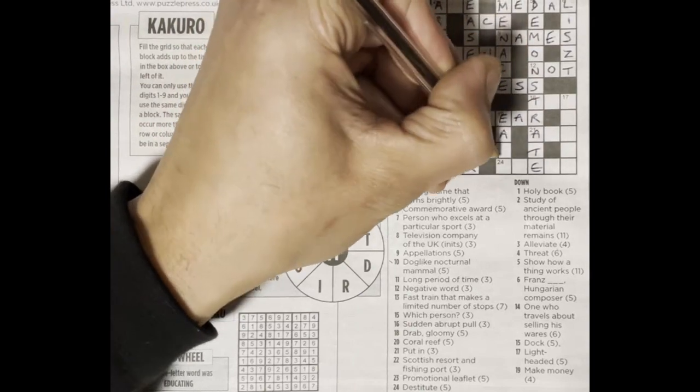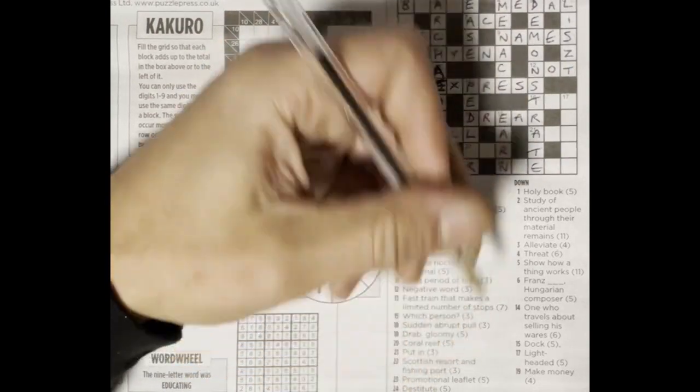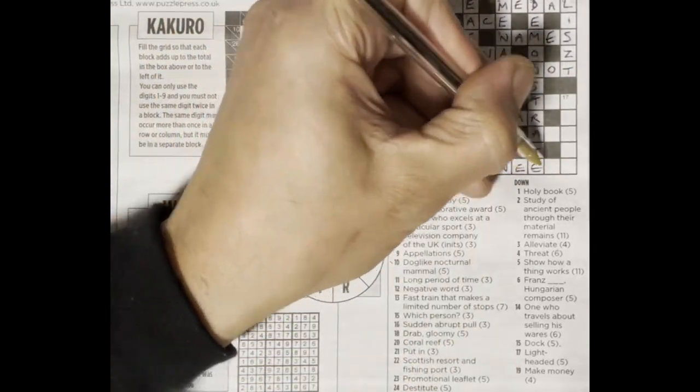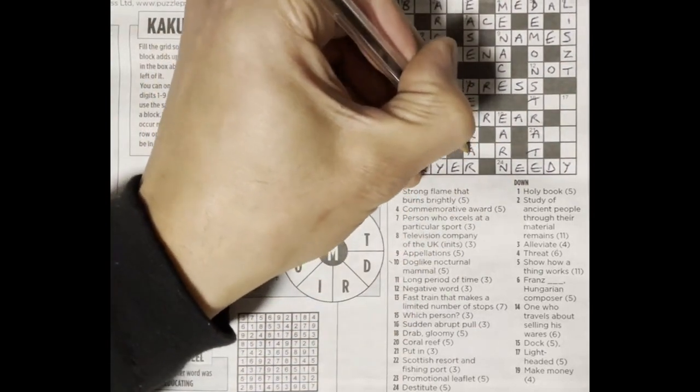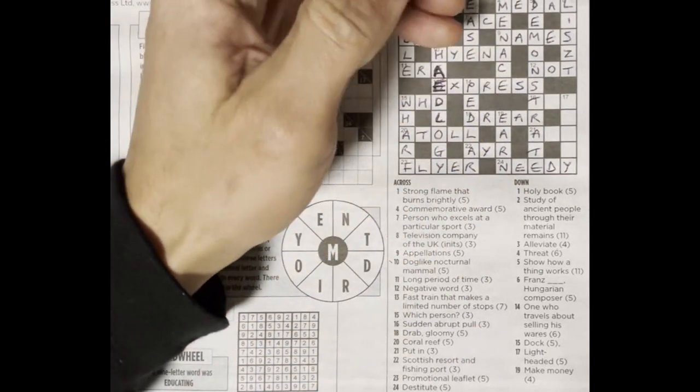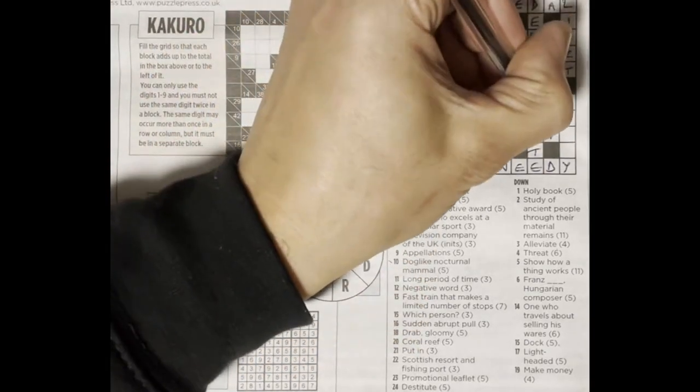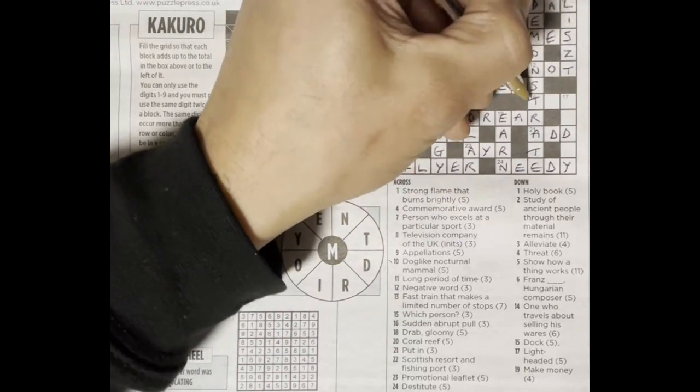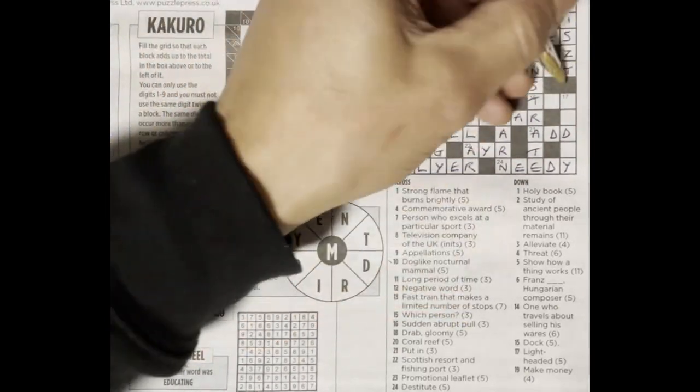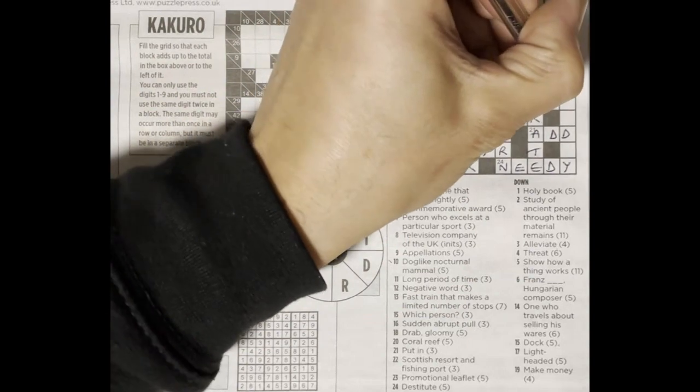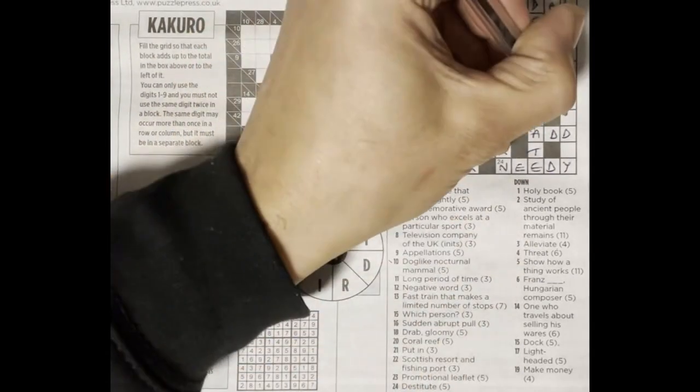Make money. Twenty-four across, destitute, needy. Twenty-two, I'm gonna go with Ayr. Twenty-one across, put in, add. Sixteen across, sudden abrupt pull. Seventeen down, lightheaded, giddy.